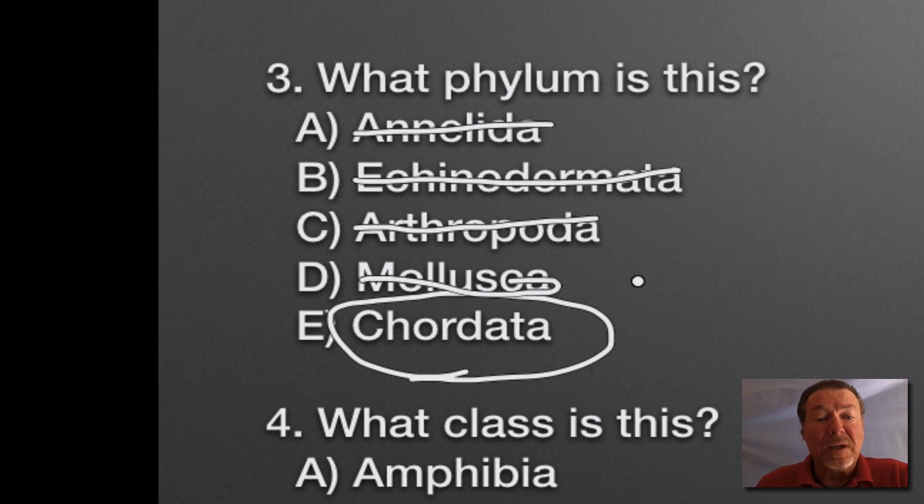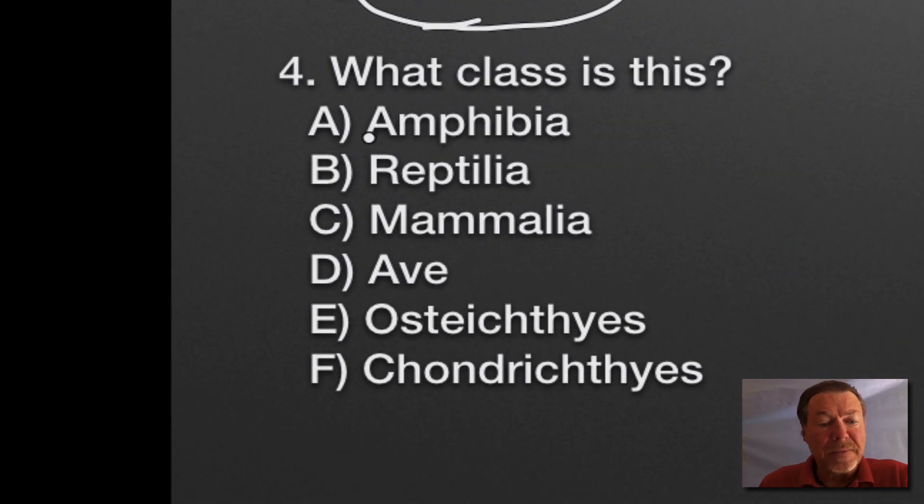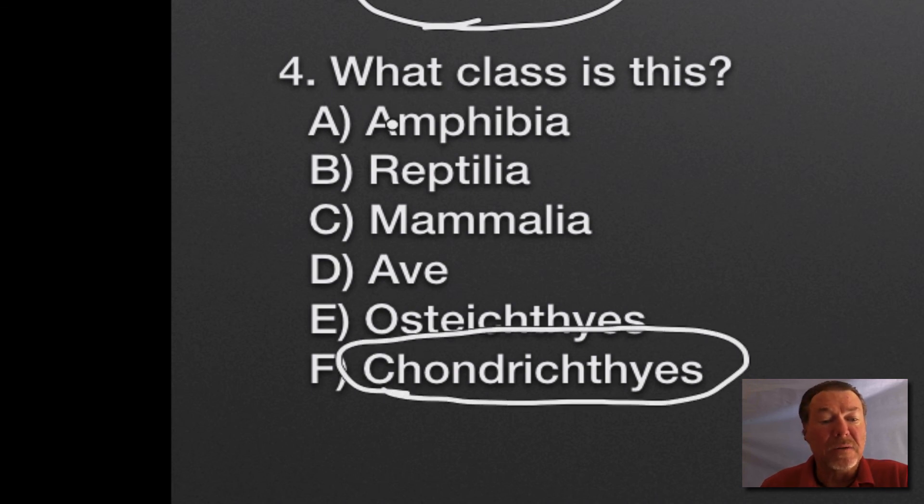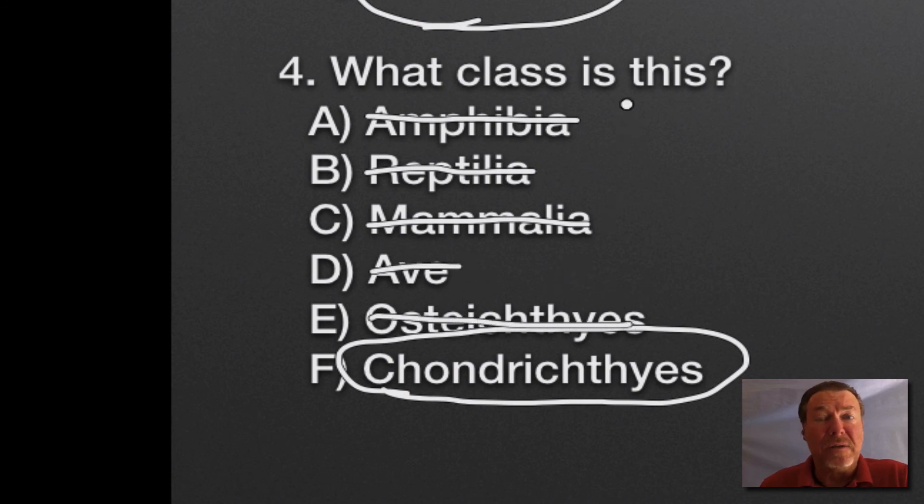What class is this? It's Chondrichthyes, cartilaginous bones. Amphibia is frogs, toads, and salamanders. Reptilia are snakes, lizards, and turtles. Mammalia have fur, which the shark obviously doesn't. Aves are the birds. And Osteichthyes are the bony fish. If I say fish and you picture it in your mind, you're probably picturing Osteichthyes. Chondrichthyes is only the sharks, skates, and rays. In this case, a shark has cartilaginous bones.